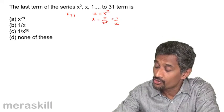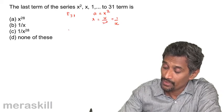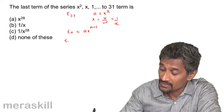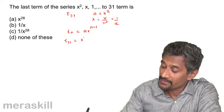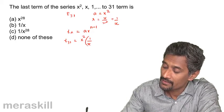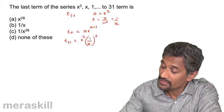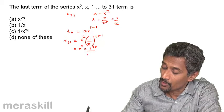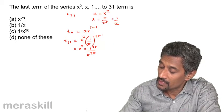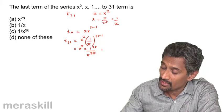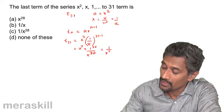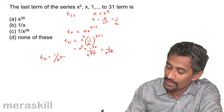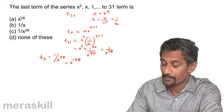We need to find t₃₁. We know tₙ = a·r^(n−1), so t₃₁ = a·r^30 = x² × (1/x)^30 = x² × 1/x³⁰, which gives x² / x³⁰ = 1/x²⁸.